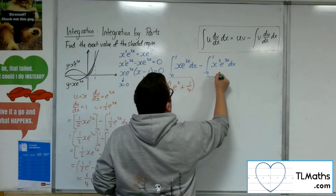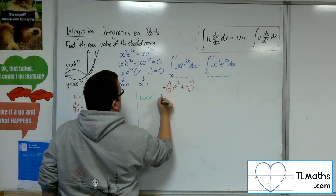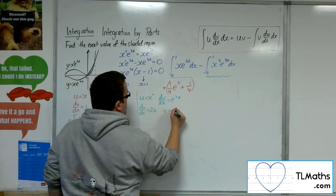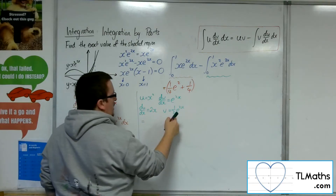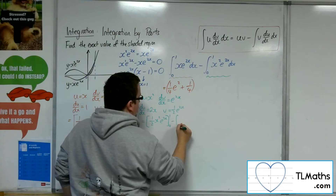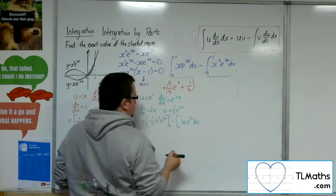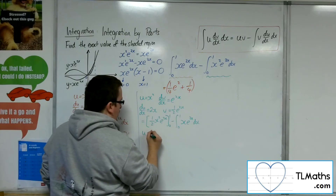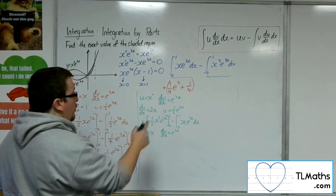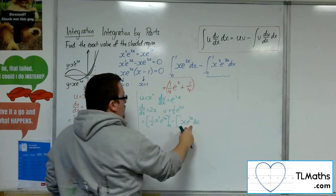Now let's deal with the second integral. Using integration by parts: u equals x squared, dv by dx equals e to the 2x. So du by dx equals 2x and v equals 1 half e to the 2x. Applying the formula: u times v gives 1 half x squared e to the 2x evaluated between 0 and 1, take away the integral between 0 and 1 of x e to the 2x dx. I can just use the result I already have for that integral.